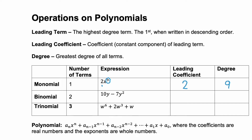In the second line we have a binomial, which means two terms. Notice we have 10y and negative 7y squared. This isn't written in descending order, so we want to rewrite it first: negative 7y squared plus 10y. Now we can identify that leading coefficient, which is negative 7 — notice the negative sign goes with that term. And the degree here is that exponent of 2.